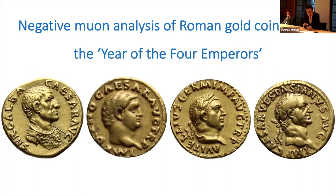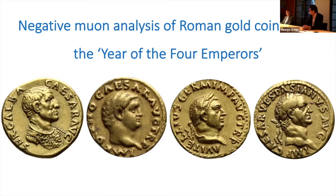Dr. Green's current research project uses XRF, LA-ICP-MS, and negative muon XES to investigate the major and trace element composition of the gold coinages of Rome and its African and Asian neighbors. The broad aim is to build a better picture of the gold supply networks that existed in these various regions and how they interacted, including the circulation of gold coins and the ways they were melted as a result of conquest. Without further ado, George.